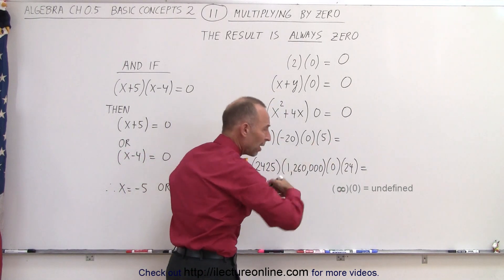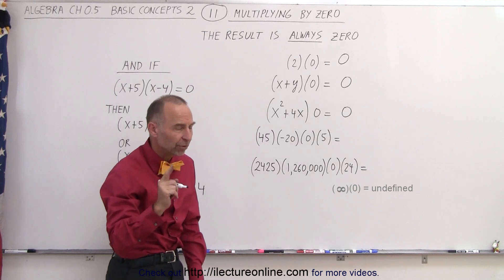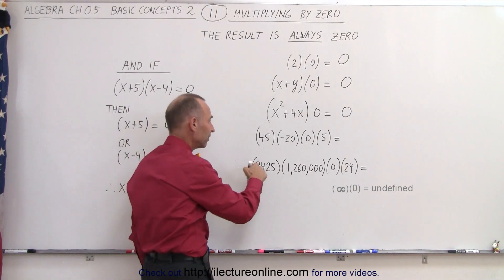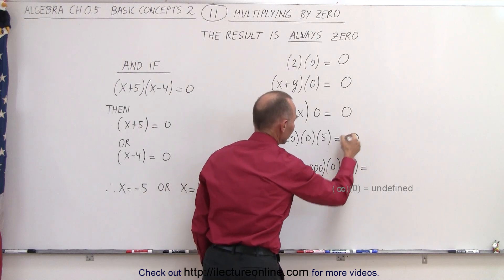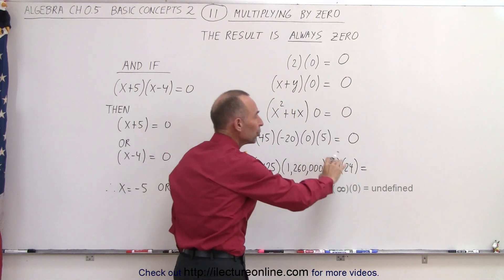How about if I have a whole bunch of numbers, positive and negative numbers, but one of them is zero? 45 times negative 20 times zero times five, it is still zero.